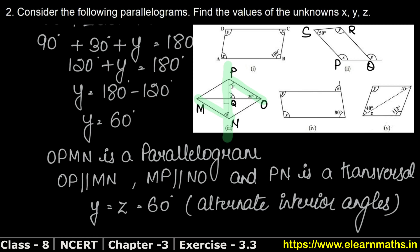So z equals y equals 60 degrees. That is our answer for part C. Let's do the next part now.